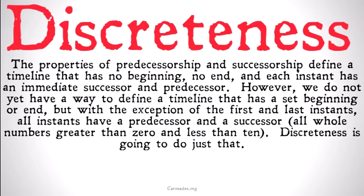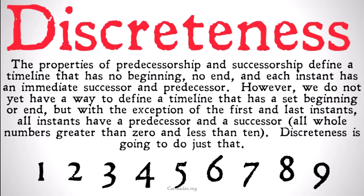We do not yet have a way to define a timeline that has a set beginning or end, but with the exception of the first and last instance, all instants have a predecessor and a successor. A whole number greater than 0 and less than 10, for example. These numbers are not dense — between 5 and 6 there's no other number — but they don't have the predecessorship relation, because there's no predecessor to 1, nor do they have the successorship relation.